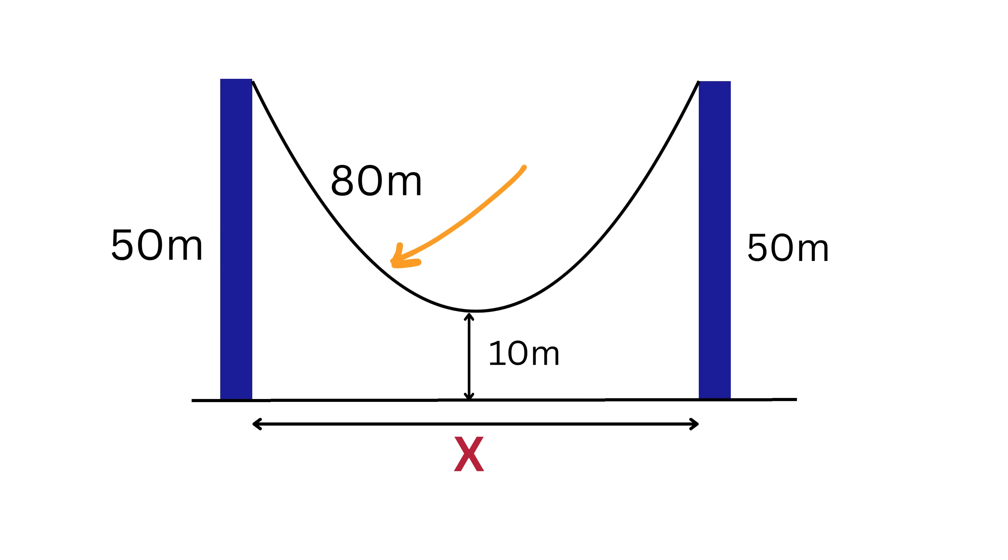Now, since the entire length of the cable is 80 meters, you might assume, well, if from the center to one side is 40 meters, then from the center to the other side is also 40 meters. Thus, both halves are 40 meters long. So far, nothing strange.